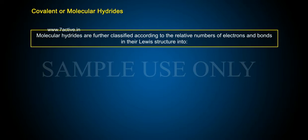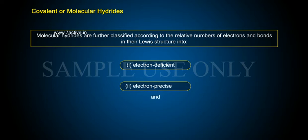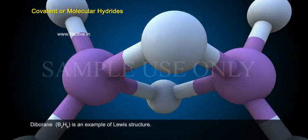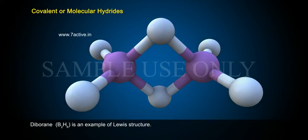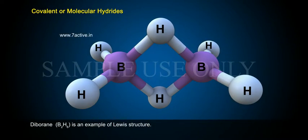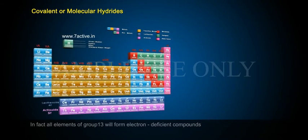Molecular hydrides are further classified according to the relative numbers of electrons and bonds in their Lewis structure into: 1) electron-deficient, 2) electron-precise, and 3) electron-rich hydrides. Diborane (B2H6) is an example of an electron-deficient hydride.